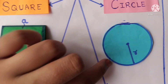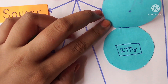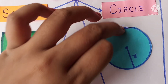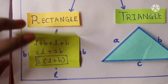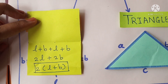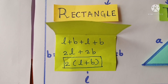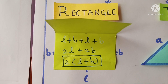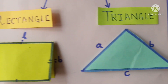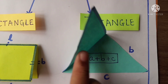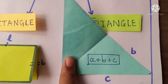Circle — perimeter of circle is equal to 2 pi r. Let's see about rectangles. L plus b plus l plus b is equal to 2l plus 2b is equal to 2 into l plus b. Triangle — perimeter of triangle is equal to a plus b plus c.